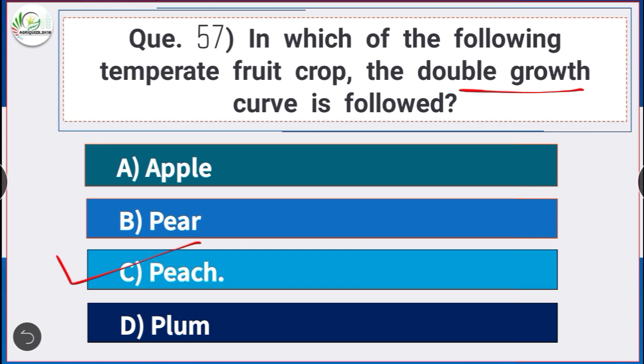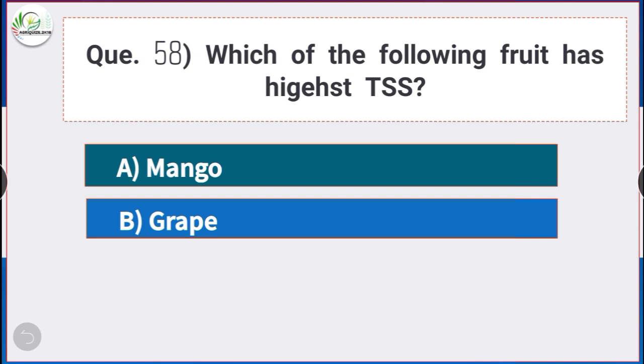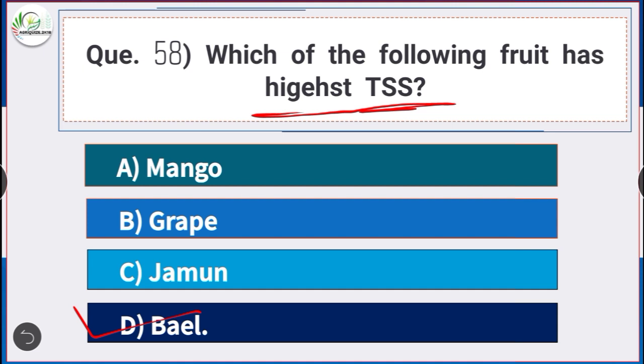Question number 58: Which of the following fruit has the highest TSS? Answer is option D — bael. The fruit having the highest TSS is bael.